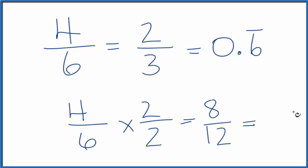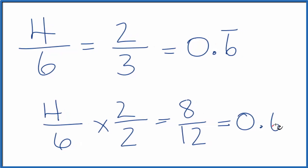If you divide eight by twelve, you get zero point six repeating. Same thing as four sixths and two thirds. They're equivalent fractions.